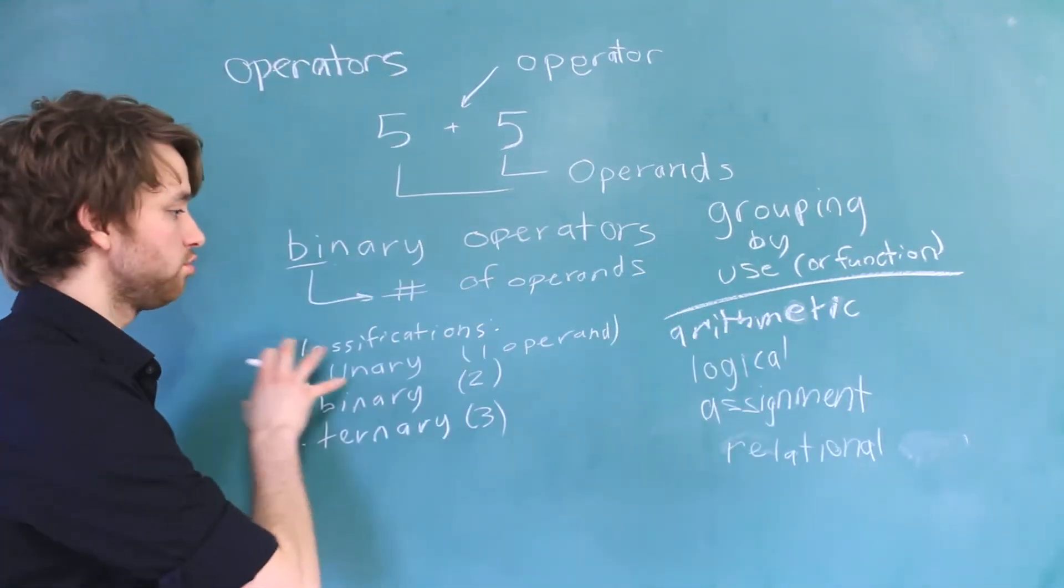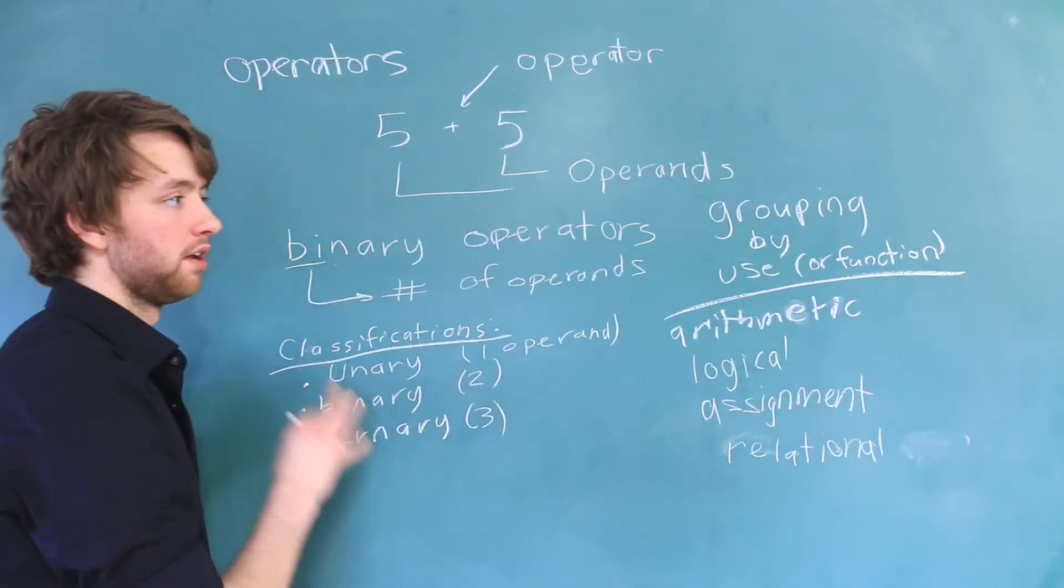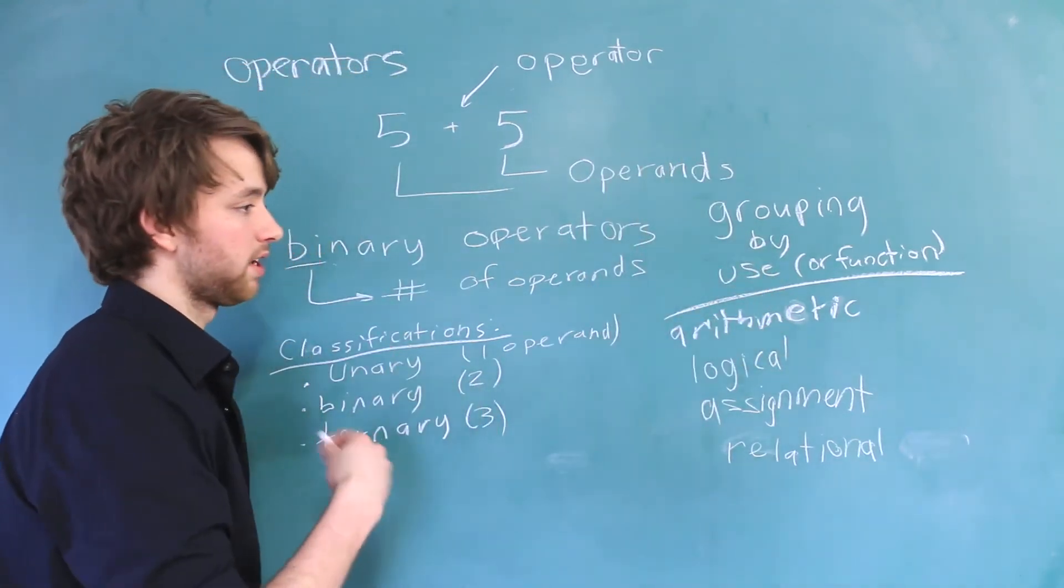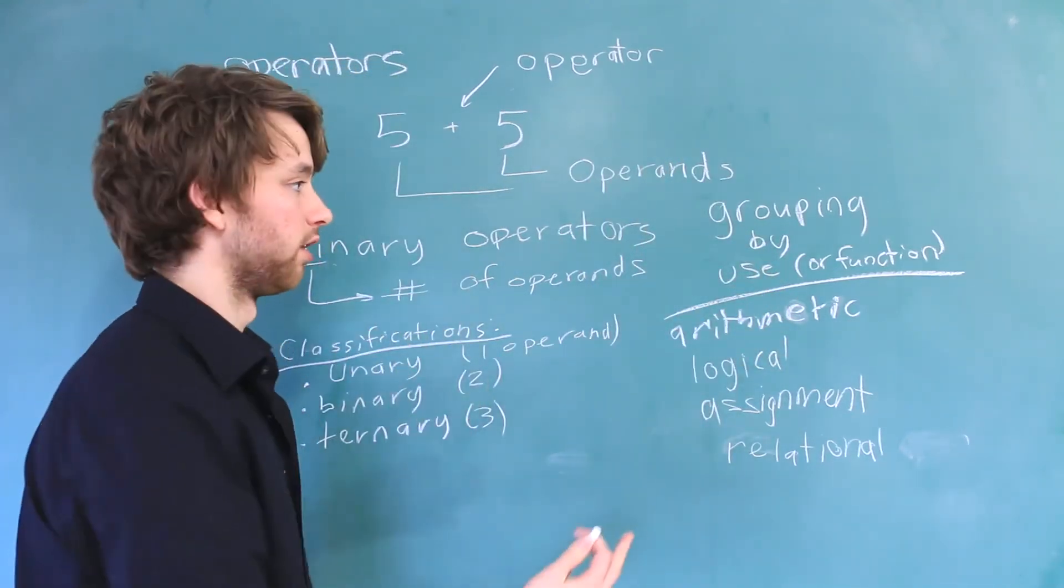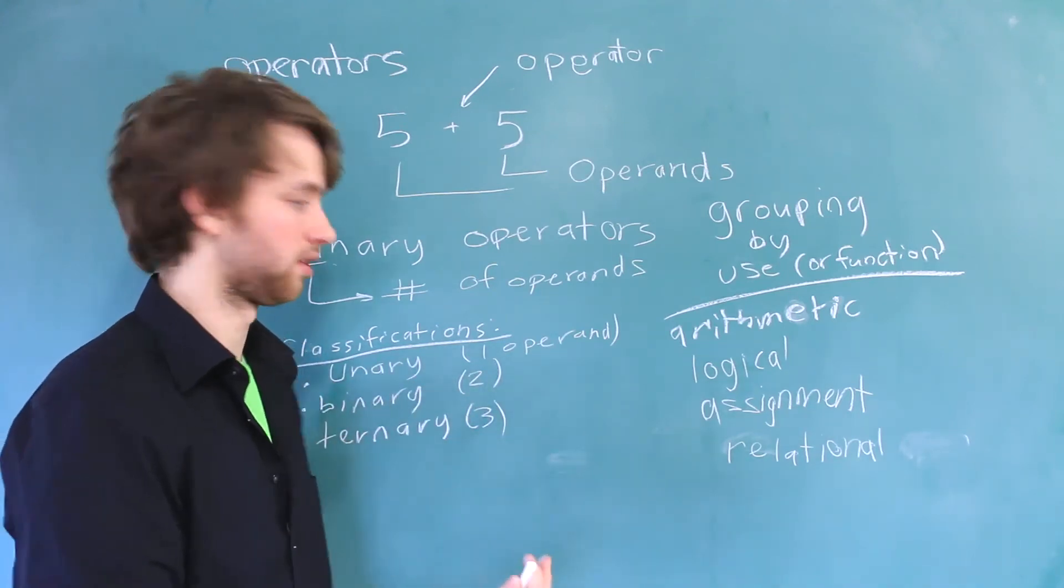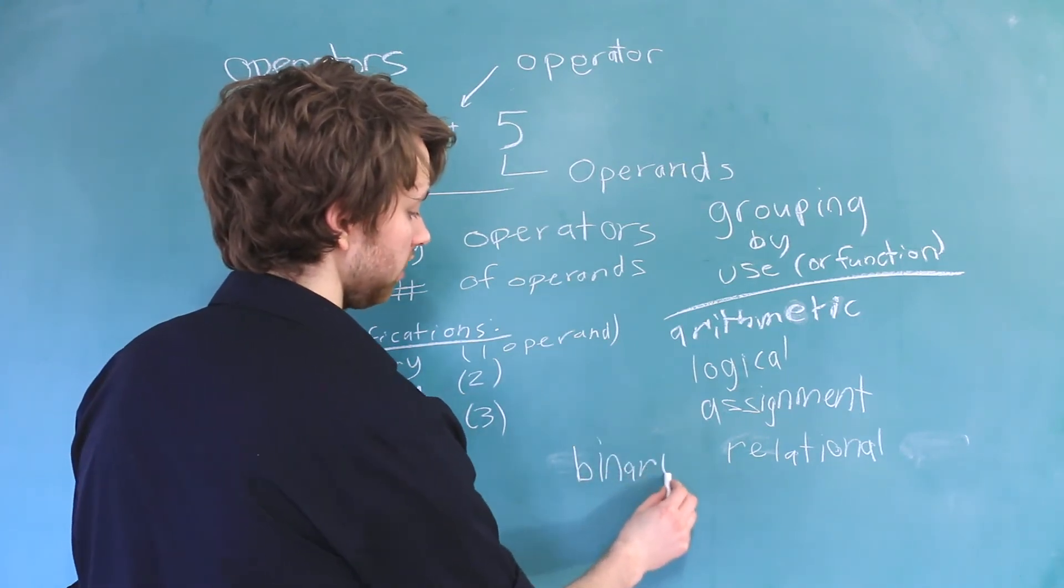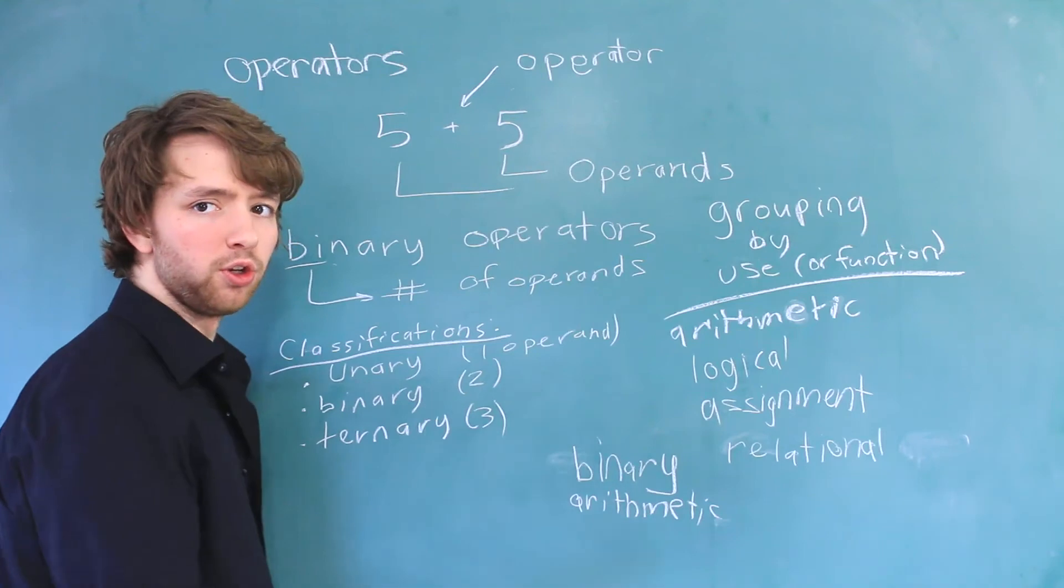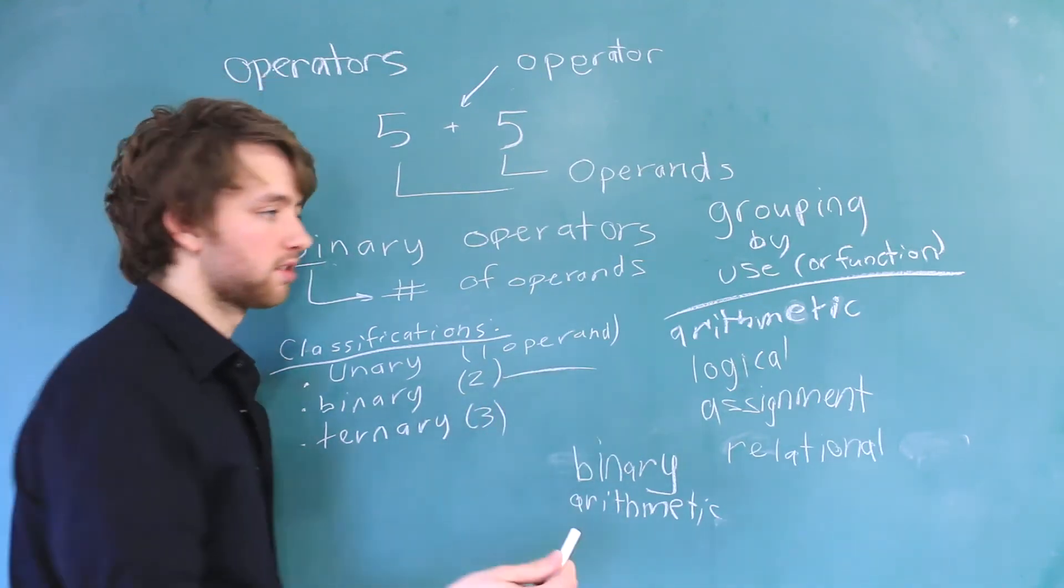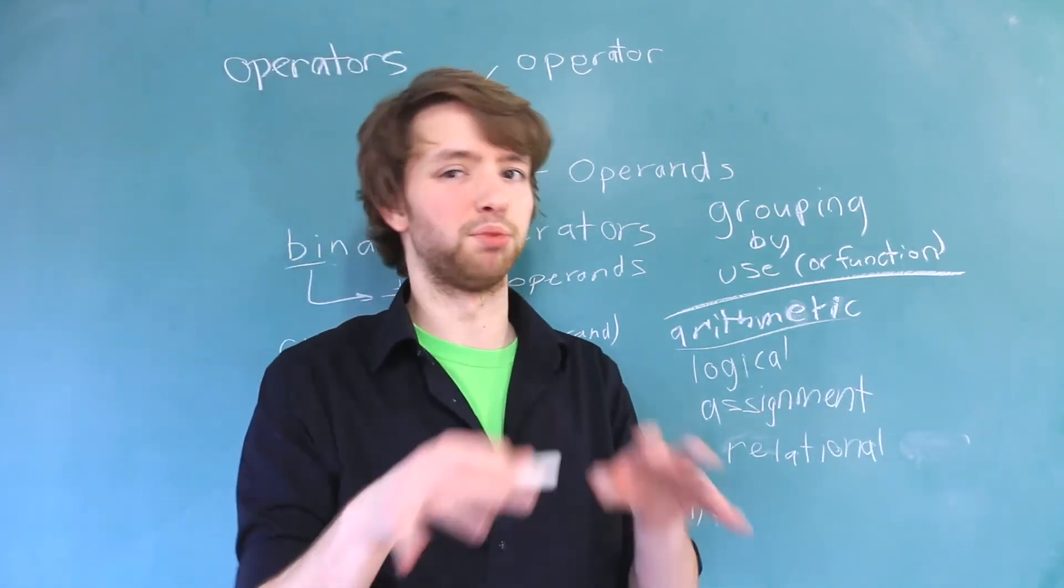The reason I gave you these two groupings, first classifying by the number of operands and then grouping them by their function or how they're used. The reason I do all that is because I can describe an operator when I'm first introducing it to you, and you can already figure out a lot about it. For example, if I say, we are going to learn a new binary arithmetic operator, you can already figure out that, hey, it's going to have two operands and it's going to be used for arithmetic. So, you don't really need to know much more than that except what to put in.